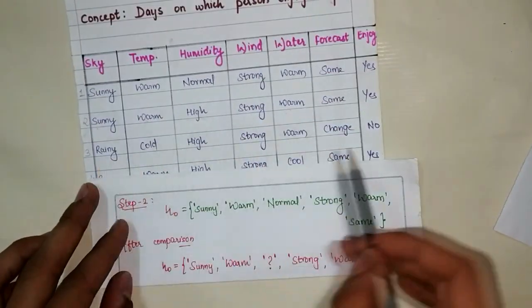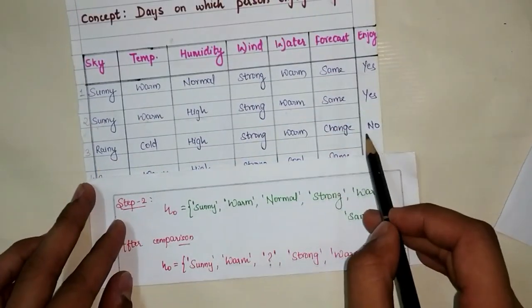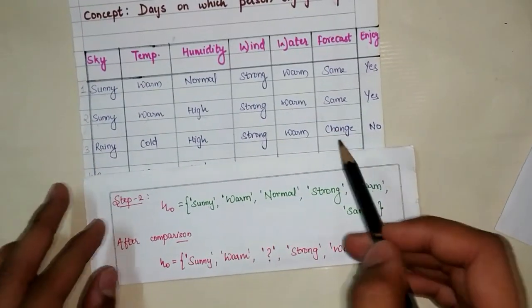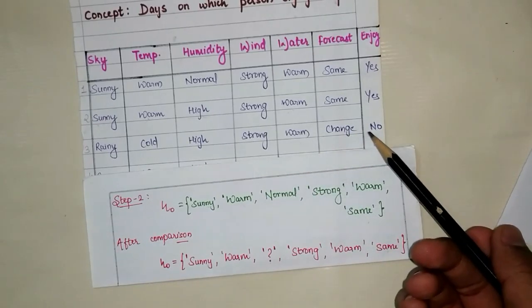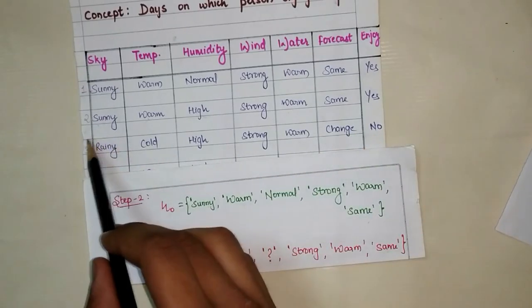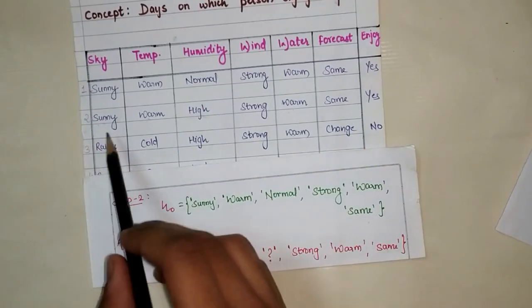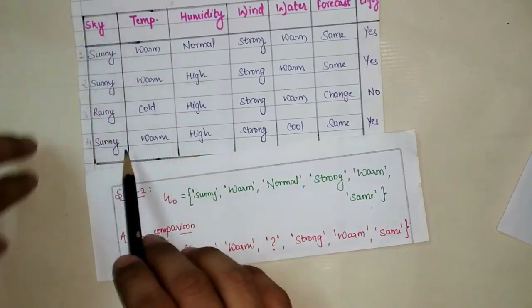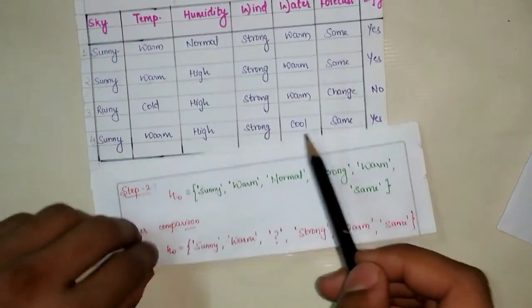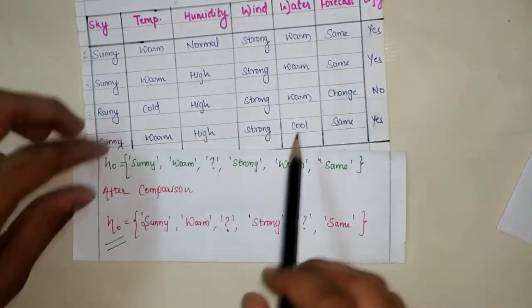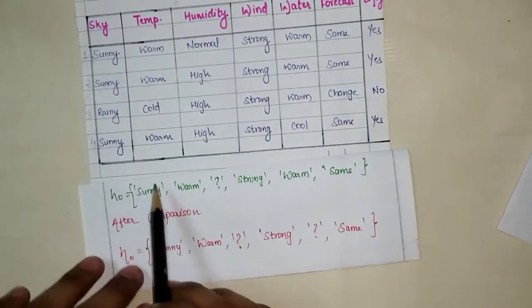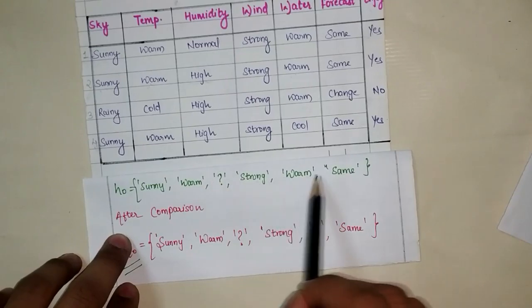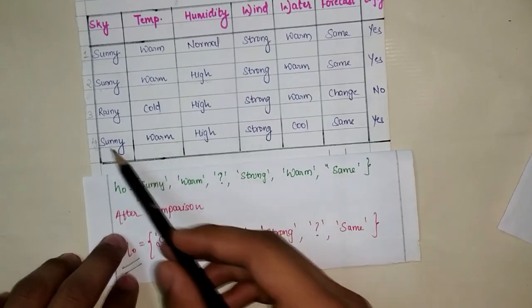The third instance is a negative example. Since Find-S works only on positive examples, we omit the third instance and move to the fourth instance. The hypothesis so far is: sunny, warm, ?, strong, warm, same.